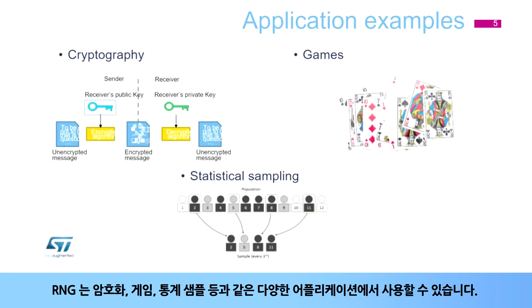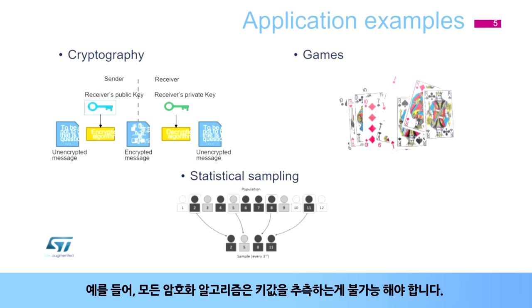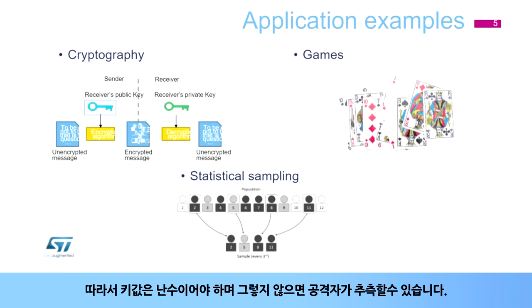The RNG can be used for a wide range of applications, including cryptography, games, and statistical sampling. For example, all the security of cryptography algorithms are connected to the impossibility of guessing the key. So the key has to be a random number, otherwise the attacker can guess it.